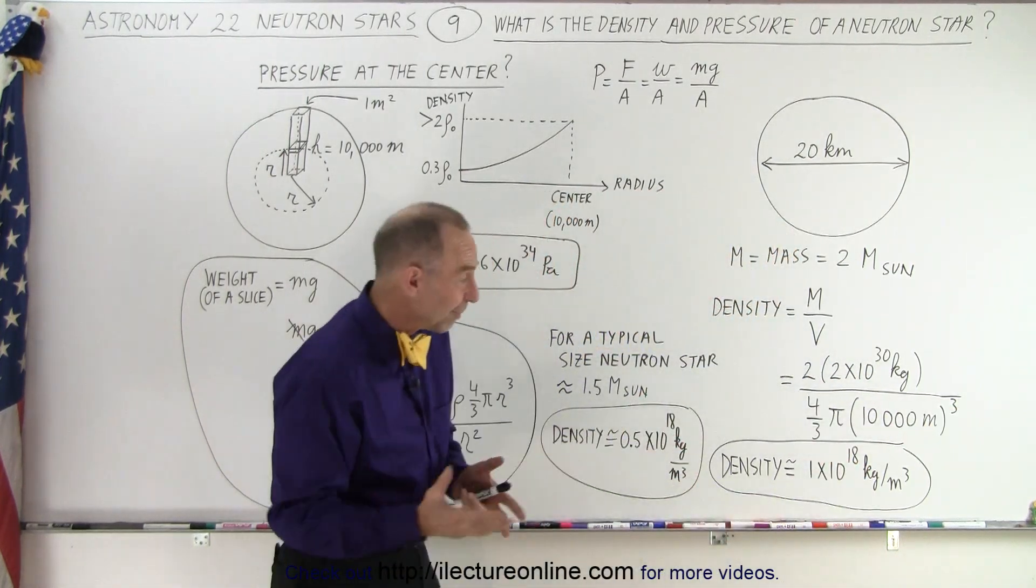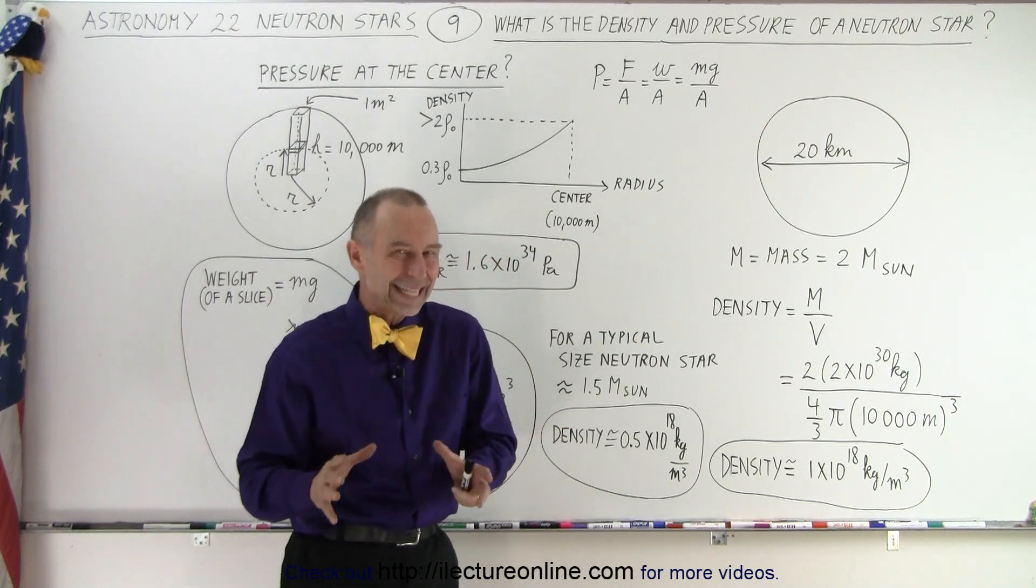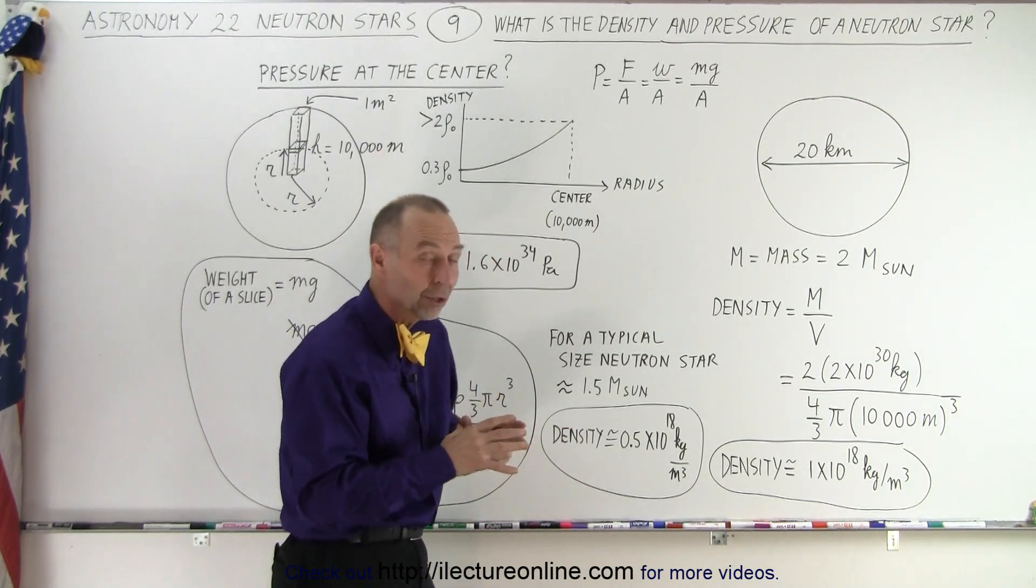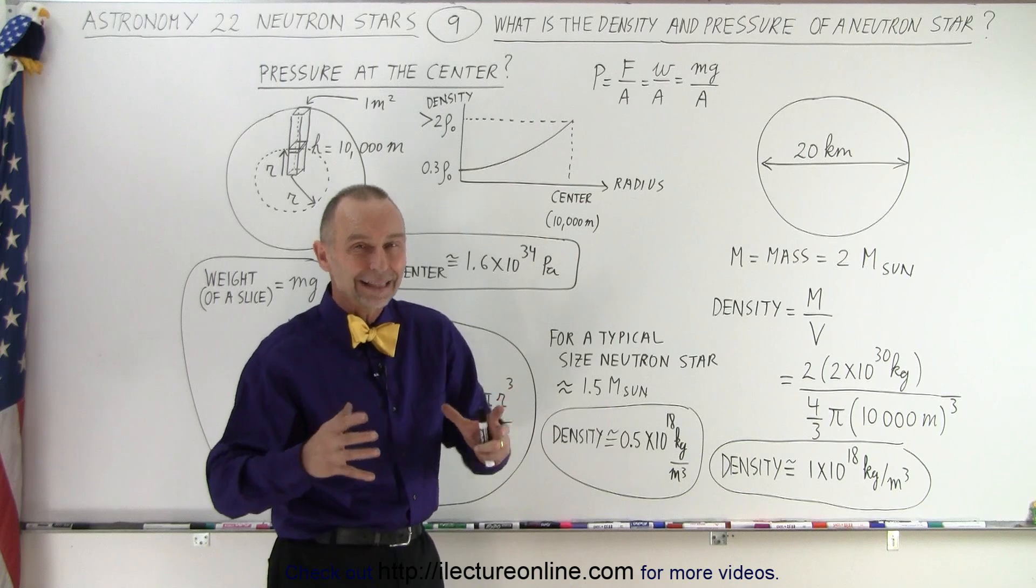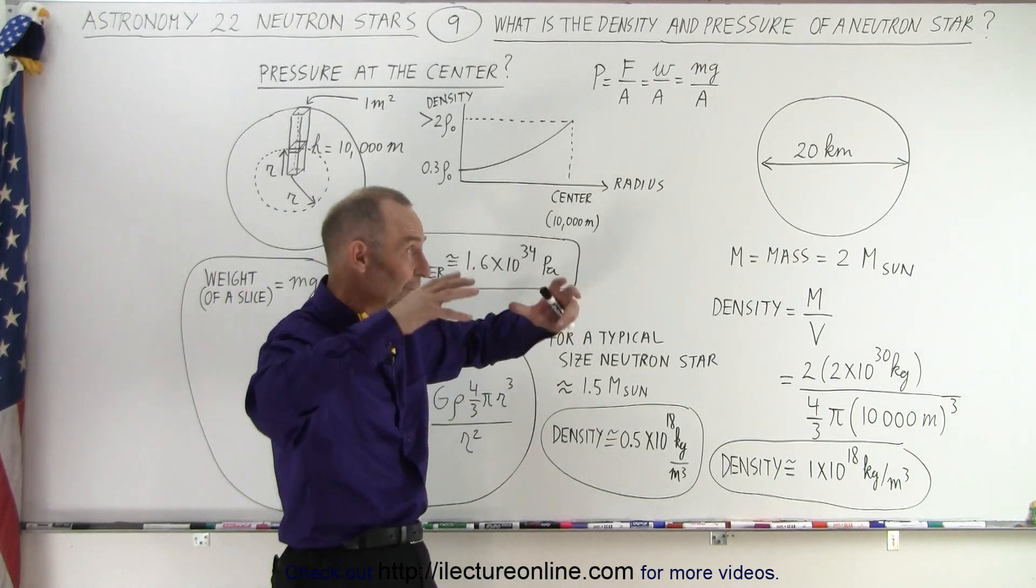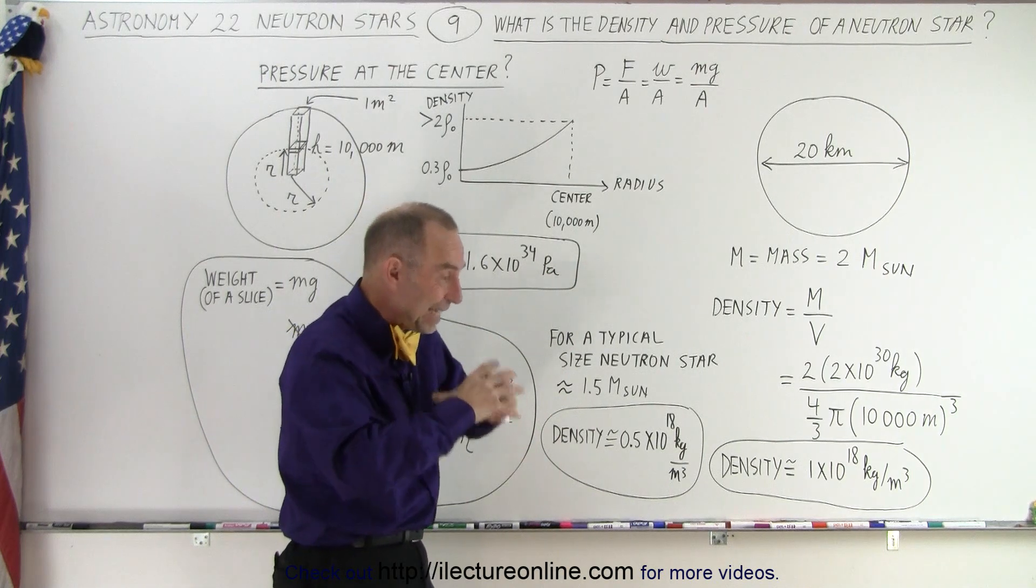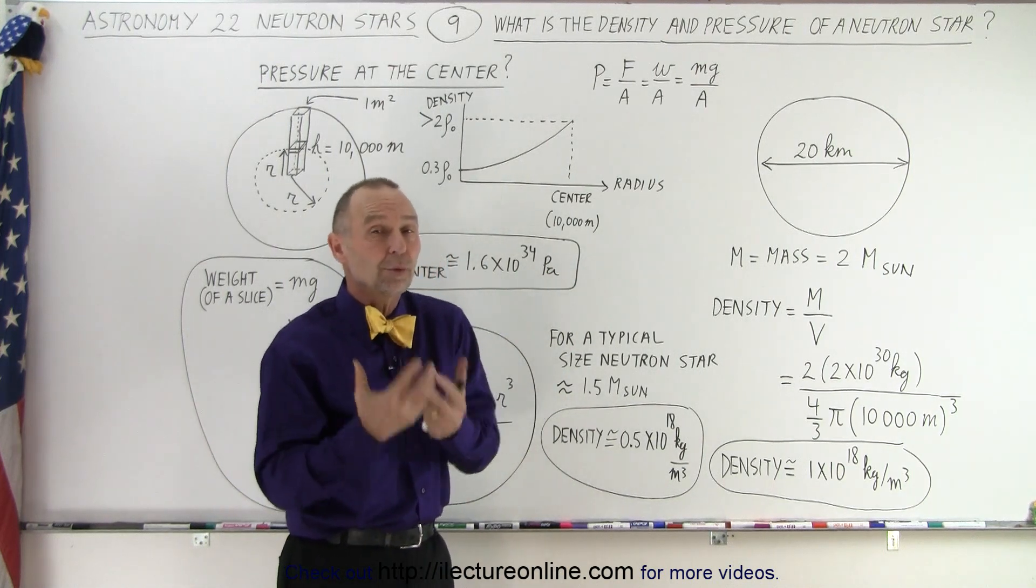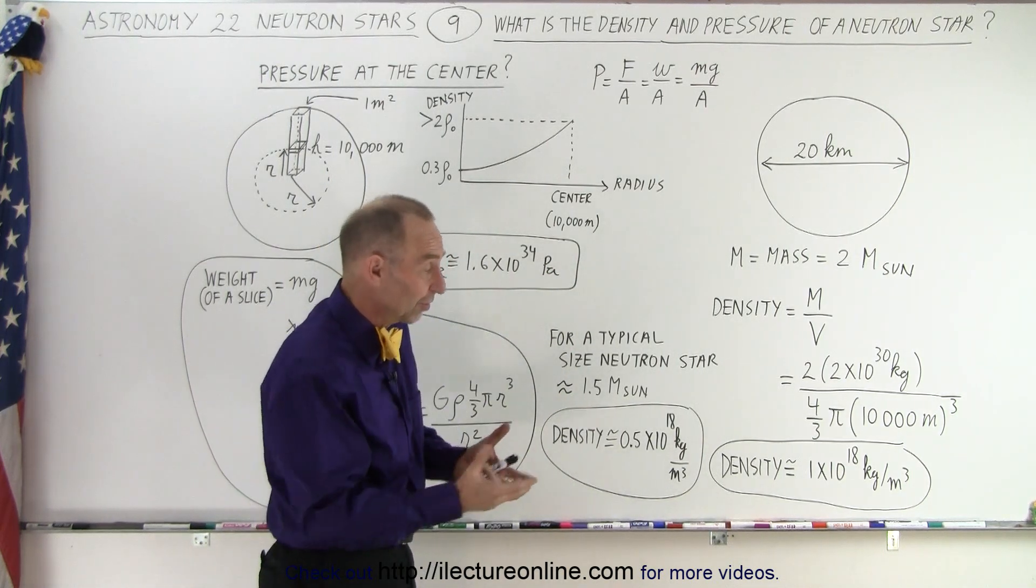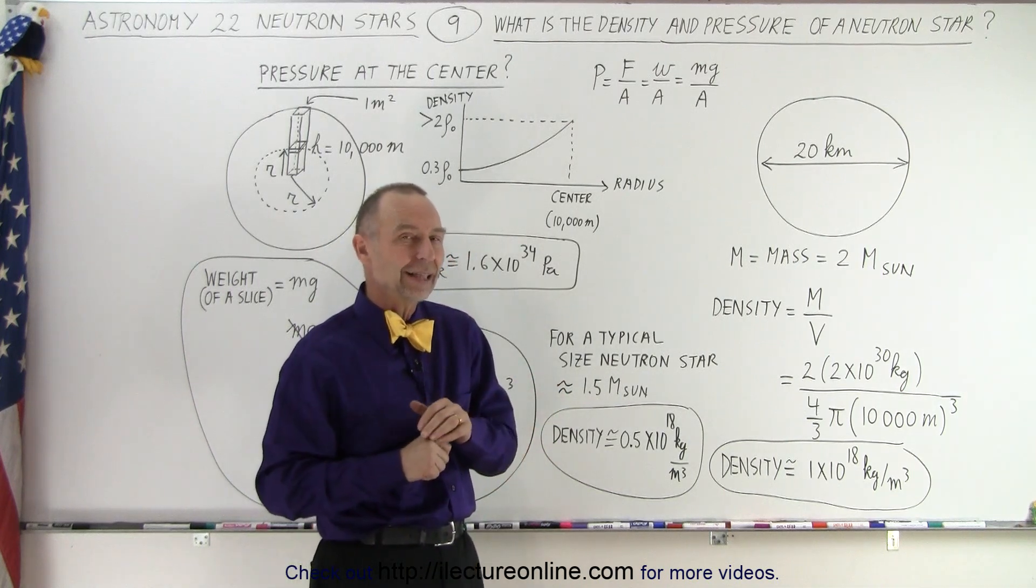and we end up with a density of about 1 times 10 to the 18 kilograms per cubic meter, which is even more dense than nuclear material. And that's because the enormous pressure towards the center of the neutron star increases the density beyond what it would be under normal circumstances. And that's why we see this very high density.